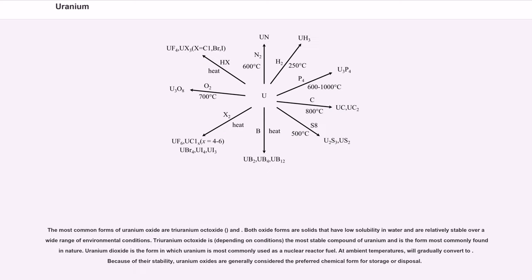The most common forms of uranium oxide are triuranium octoxide (U3O8) and UO2; both oxide forms are solids that have low solubility in water and are relatively stable over a wide range of environmental conditions. Triuranium octoxide is, depending on conditions, the most stable compound of uranium and is the form most commonly found in nature. Uranium dioxide is the form in which uranium is most commonly used as a nuclear reactor fuel. At ambient temperatures, UO2 will gradually convert to U3O8. Because of their stability, uranium oxides are generally considered the preferred chemical form for storage or disposal.